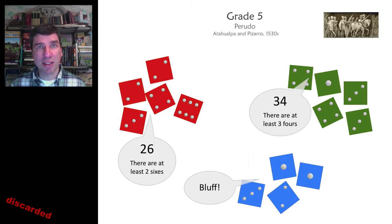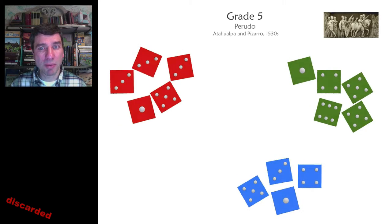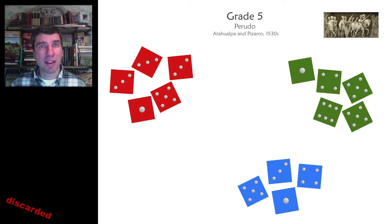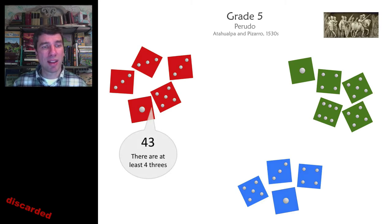The dice are re-rolled, and we do it again. The person after the person who lost the dice begins afresh. So again, it's red who goes. Red rolled a fantastic roll. Look at that, three threes. So red says that there are four threes, at least four threes on the table. Green says that there are at least four fives.